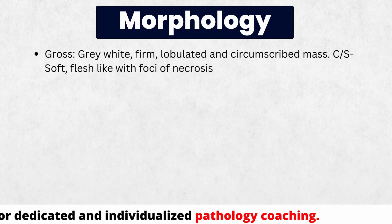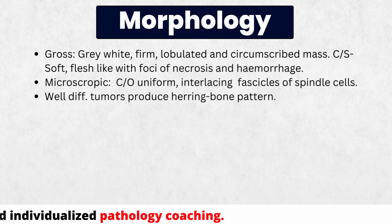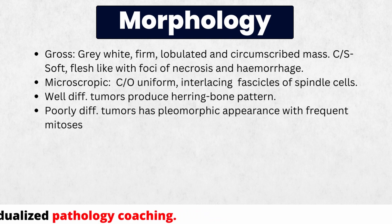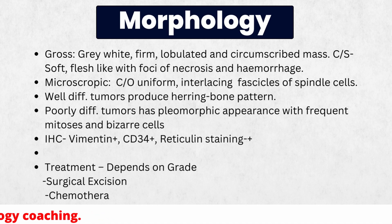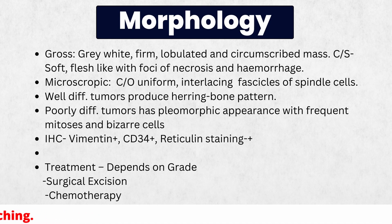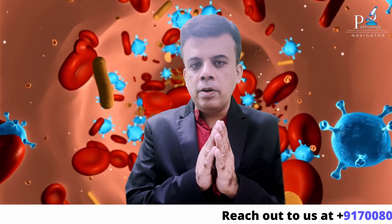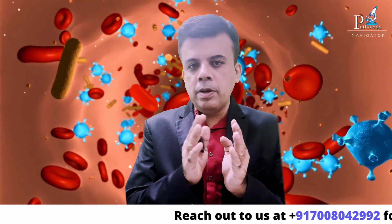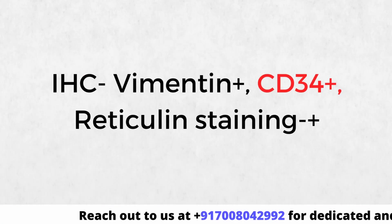The individual tumor cells are spindle cells with varying nuclear atypia, some tapering, and little cytoplasm. There may be high Ki-67 activity. Pleomorphism may be variable across different grades of fibrosarcoma. Reticulin fiber positivity may be demonstrated around each spindle cell, and CD34 and vimentin may be positive on immunohistochemistry.